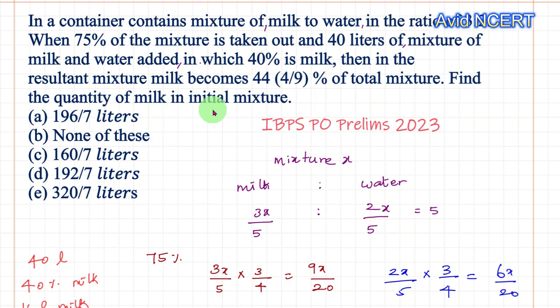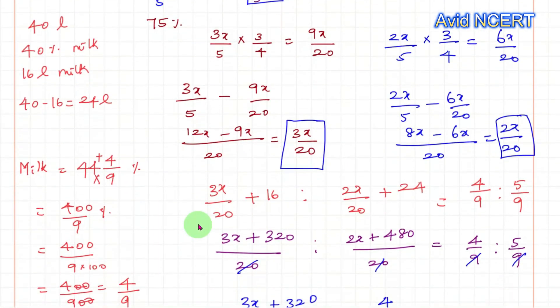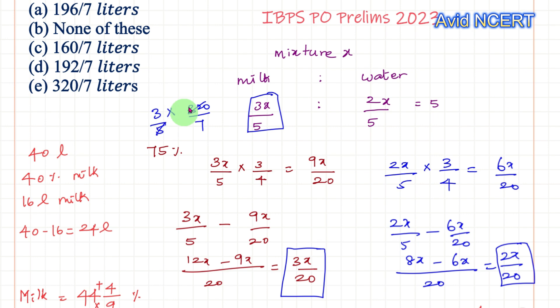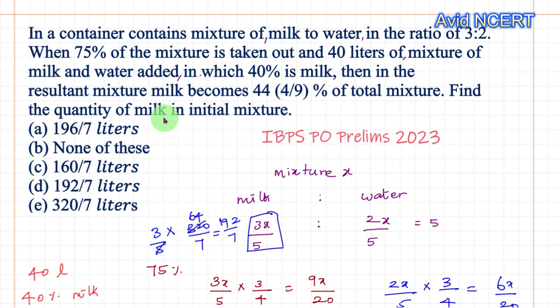The question asks for the quantity of milk in the initial mixture. The initial milk is 3x/5. Substituting x = 320/7: milk = (3/5) × (320/7) = 960/35 = 192/7 liters. Therefore the quantity of milk in the initial mixture is 192/7 liters. Thanks for watching — if you have any doubts, please let me know in the comments.